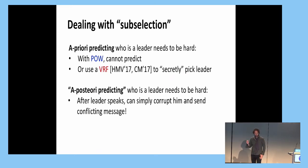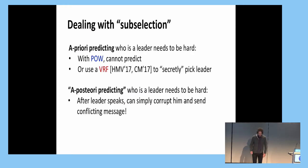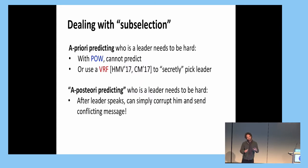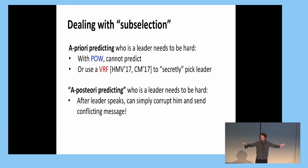It shouldn't just be hard to predict who is the leader a priori — it should also be hard to predict who is the leader even after they have become the leader, a posteriori. After the leader speaks, I know who the leader is and can corrupt them. Even though the leader has already sent something out, I can send out some conflicting message, and given the network delay, I can slow down the first message and make the second come faster — resulting in two conflicting transactions.